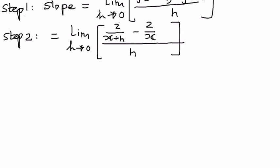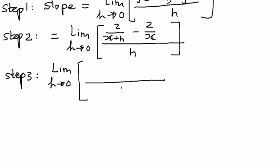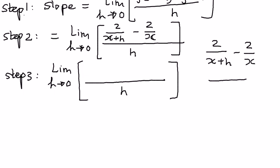Now, as the third step, we're going to simplify the math. In here, we're going to find a common denominator, the limit as h approaches 0. So for the time being, I'm going to take the numerator part to the side and write it out like this. I have 2 over x plus h minus 2 over x. The common denominator here is x times x plus h.